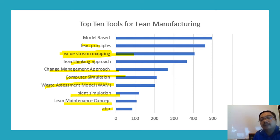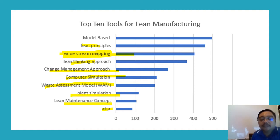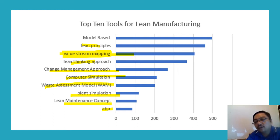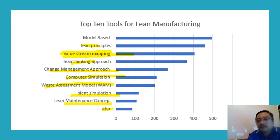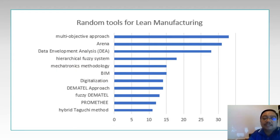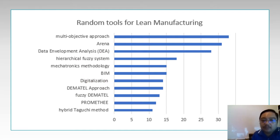I use value stream mapping as it is the most popular method — for those who are in this field, you have certainly learned about value stream mapping. There are over 400 researchers talking about value stream mapping, so I made a special video on it. These are among the other random tools besides value stream mapping.